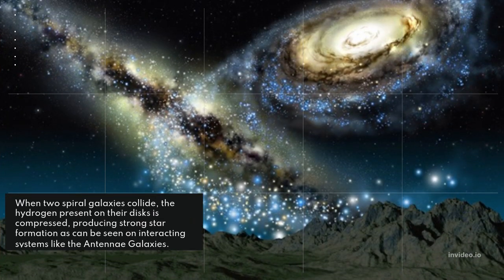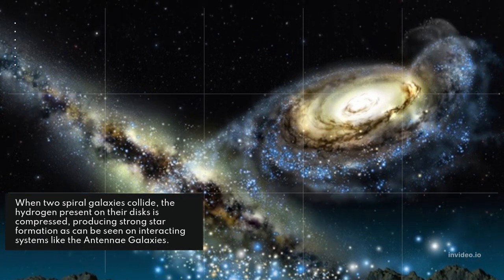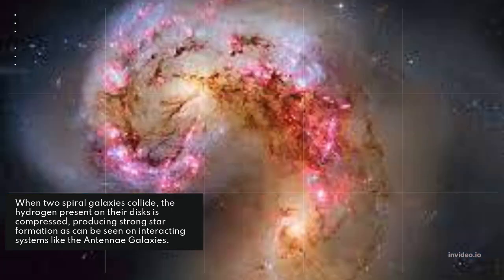When two spiral galaxies collide, the hydrogen present on their disks is compressed, producing strong star formation, as can be seen in interacting systems like the Antennae Galaxies.